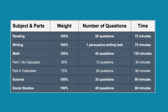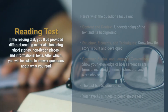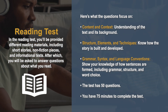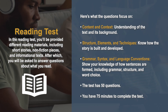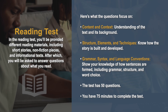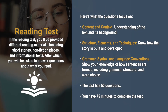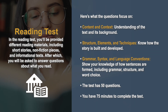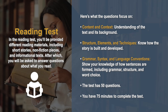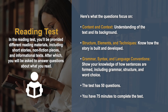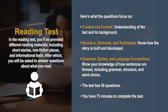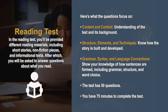Let's look at how each test is set up. Each test has a different number of questions and time limits. In the reading test, you'll be provided different reading materials, including short stories, non-fiction pieces, and informational texts, after which you will be asked to answer questions about what you have read. The questions focus on: content and context — understanding of the text and its background; structure, elements and techniques — how the story is built and developed; and grammar, syntax and language conventions — showing your knowledge of how sentences are formed, including grammar, structure, and word choice. The test has 50 questions and you have 75 minutes to complete it.